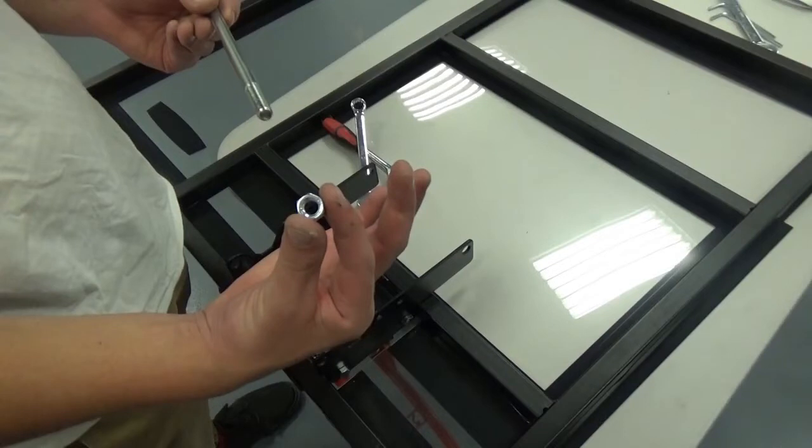In this instructional video we will be assembling the backboard to the pole of a lifetime basketball system. Your system may look different than the model shown, but the steps performed will still apply.